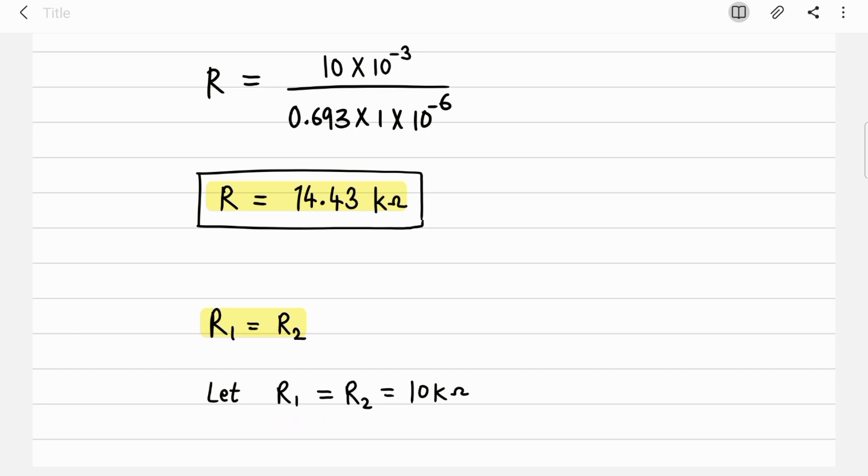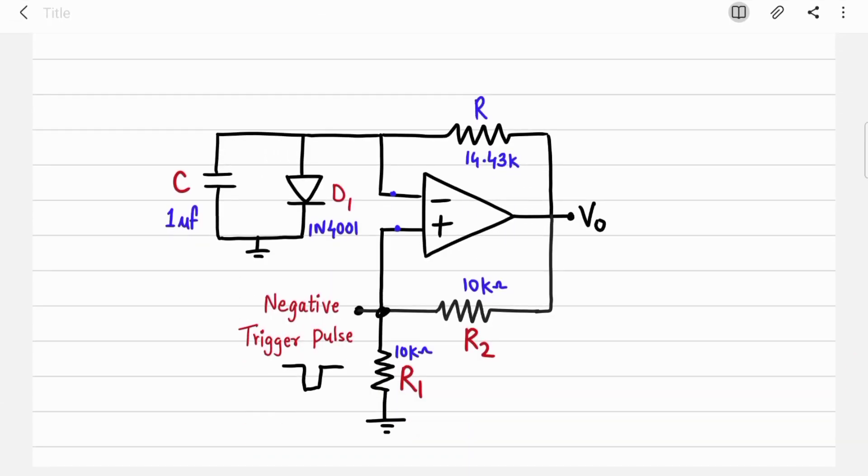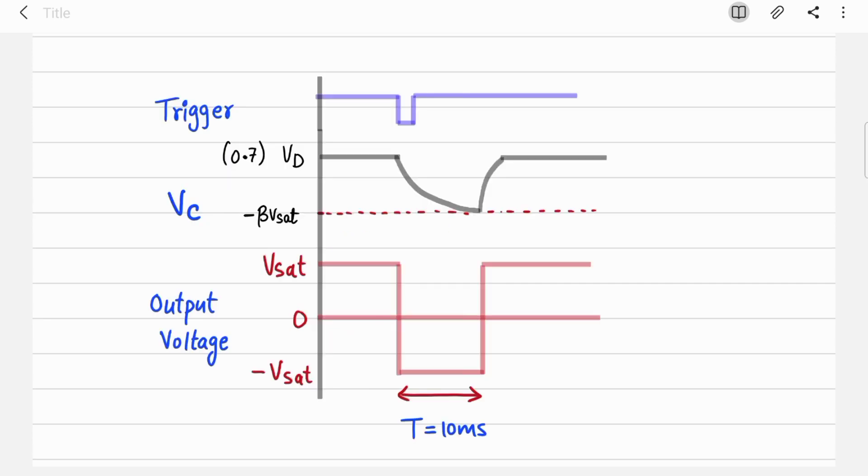Now the last step is you have to draw the circuit diagram and waveforms. So this is the monostable multivibrator: C is 1 microfarad, R is 14.43 kilohms, R1 is 10 kilohms and R2 is also 10 kilohms. And these are the three waveforms - this is the trigger pulse which is applied to monostable multivibrator, then this is capacitor voltage, and this is output voltage.